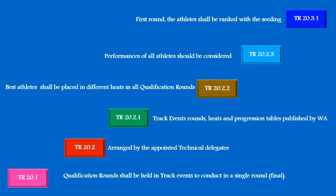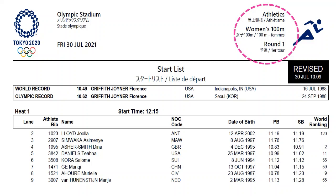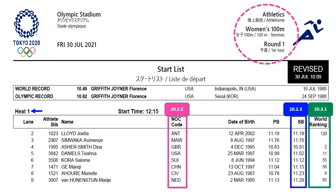This is the official start list of Olympics women's 100 meters round 1. There are 7 heats for 55 athletes. This is heat 1 of 7. By arranging 7 heats, Technical Rule 20.2.1 is followed. Technical Rule 20.2.2 is followed here to place different country athletes when a country participates with more than 1 athlete. Technical Rules 20.2.3 and 20.3.1 are also followed; athlete performances and ranking have been considered to place the athletes.